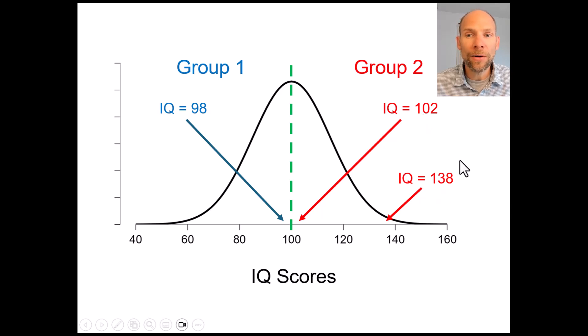People with an IQ score of 102 are very different in terms of their potential for performance on certain jobs as compared to individuals who have an IQ score of 138